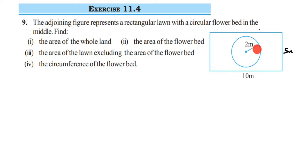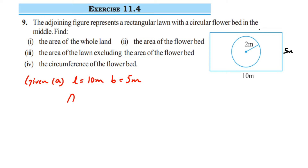For the first question, we need to find the area of the whole lawn. The length is equal to 10 meters and the breadth is equal to 5 meters. Since the lawn is rectangular, area equals length into breadth, which is 10 into 5, which equals 50 meter square. That is the area of the lawn.